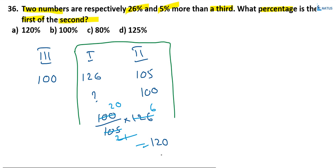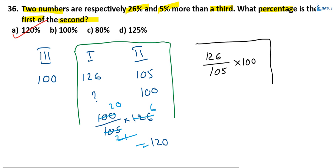So second one equals 100 and first one equals 120. The answer is Option A. Another technique: what percentage is first of second? Take first as numerator and second as denominator: 126 by 105 into 100. If the question asks what percentage is the second of the first, take 105 by 126 into 100. This is also valid logic, but the previous method is a very short one.